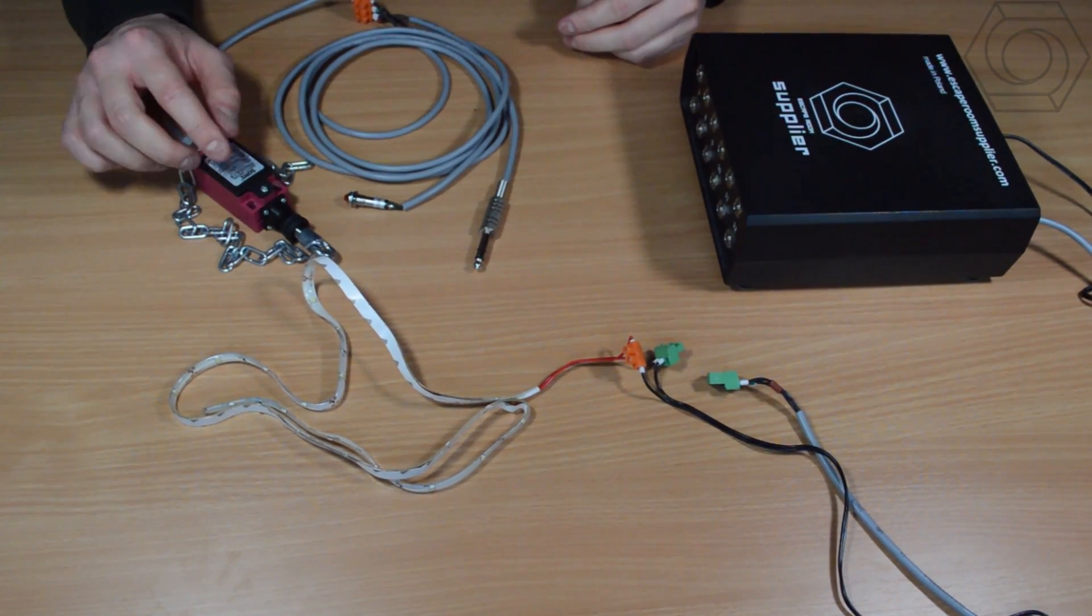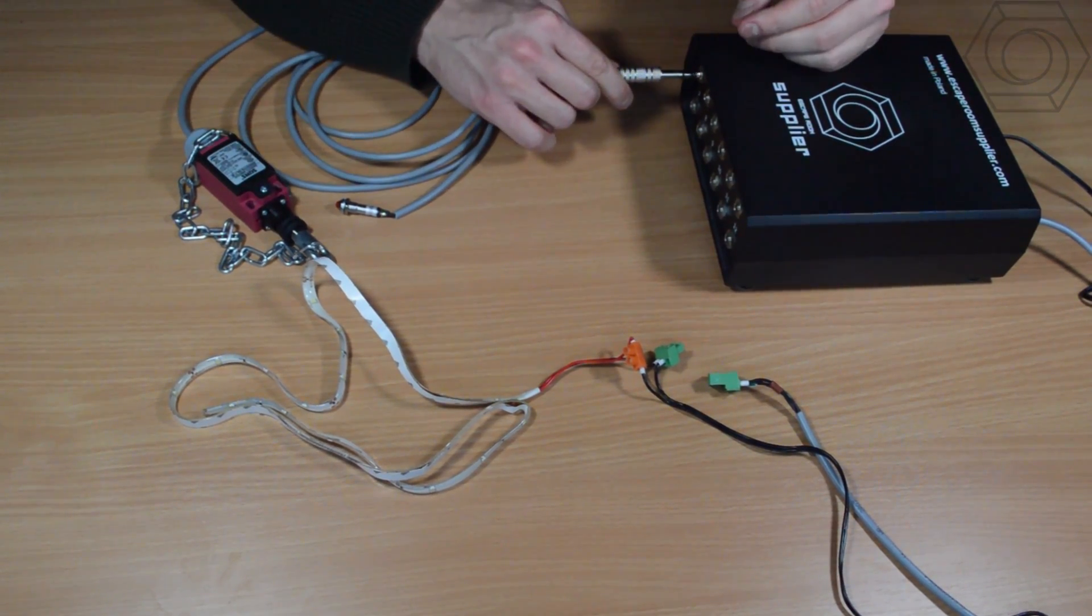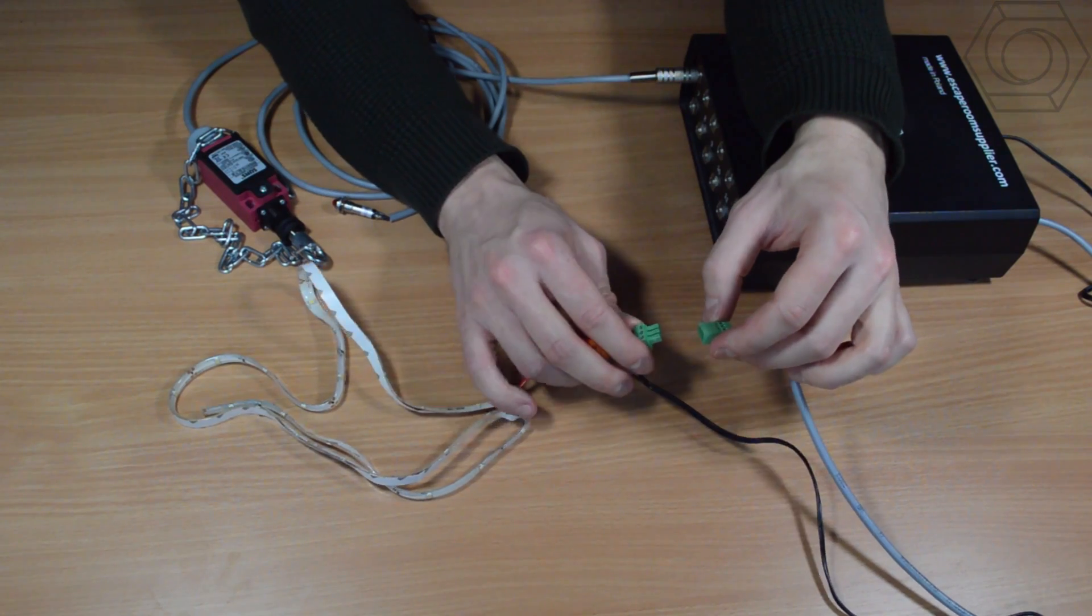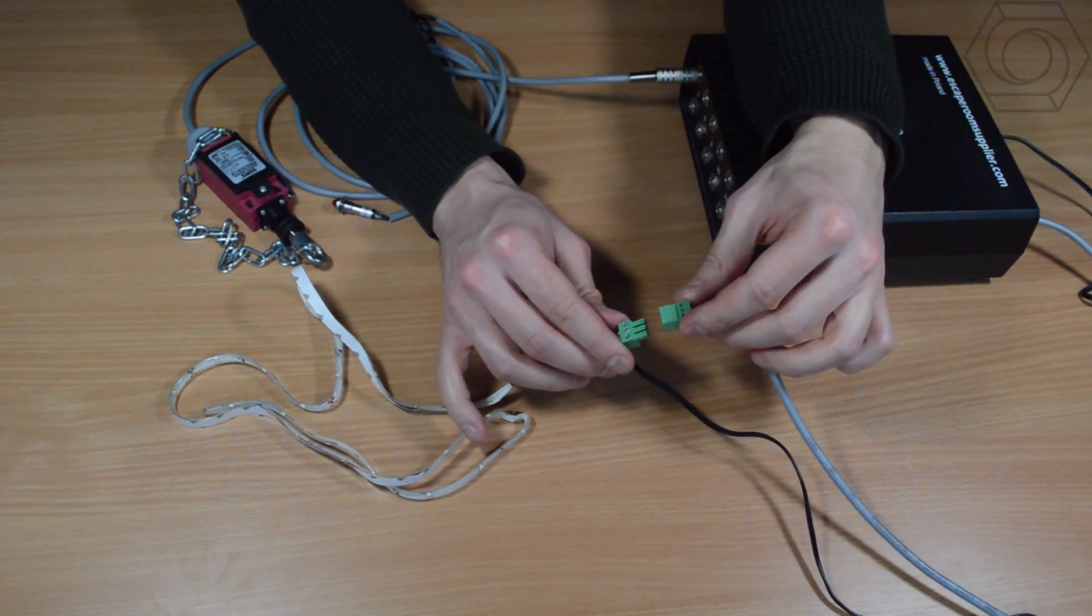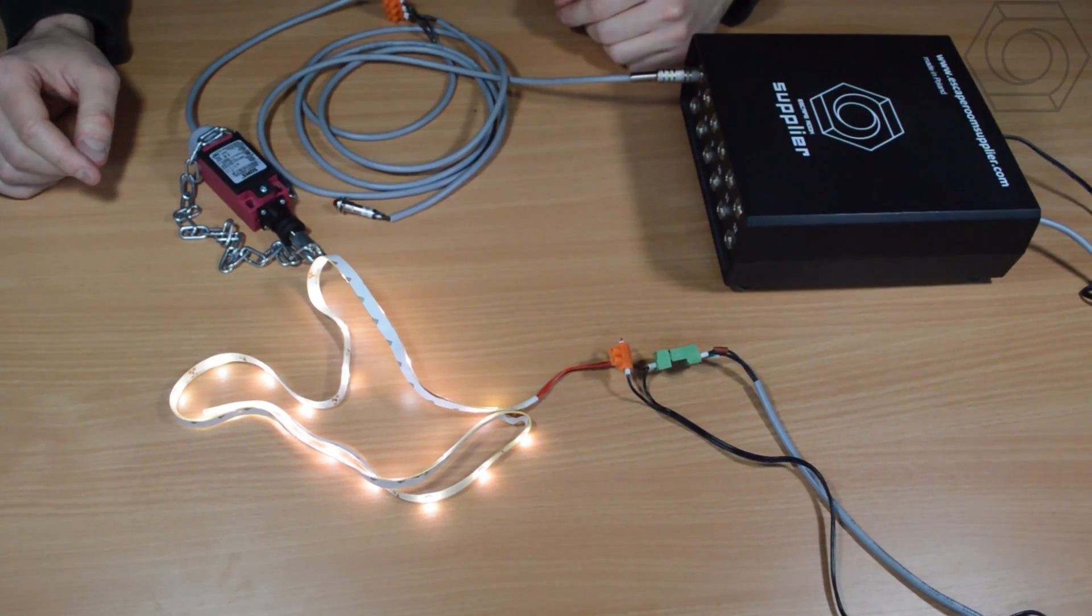To set up the pull to unlock sensor you need to plug it to the Universal Puzzle Controller and then connect any output set you want. In this case it is LED lights.